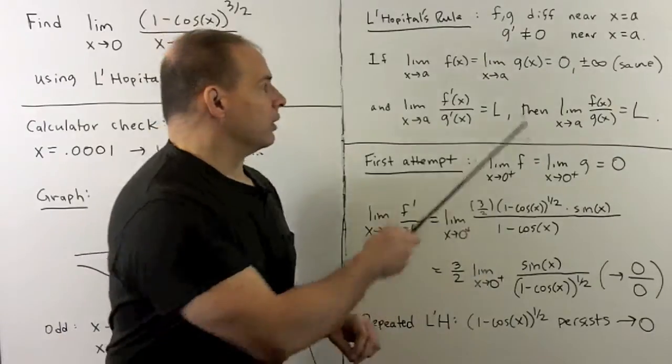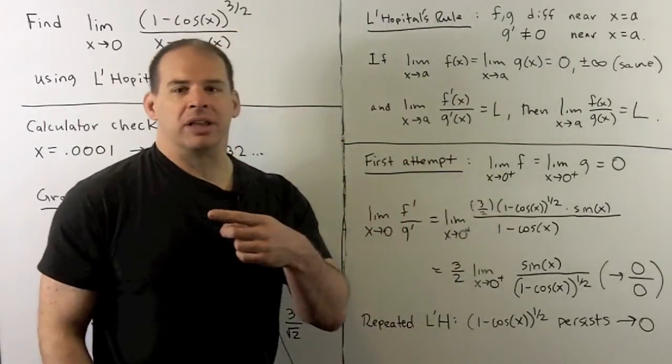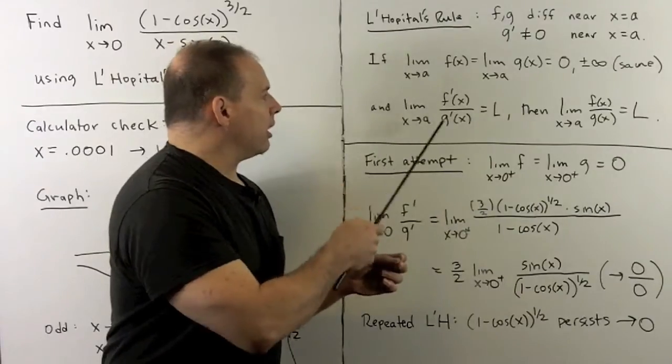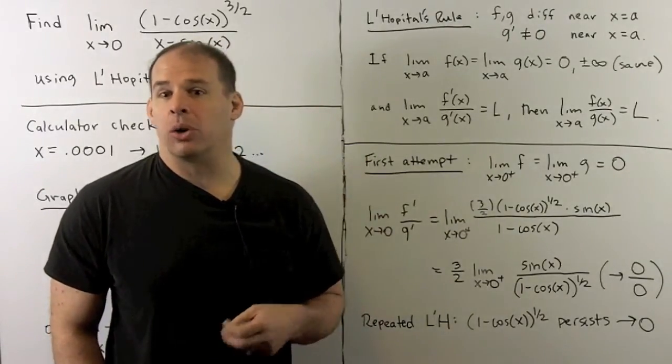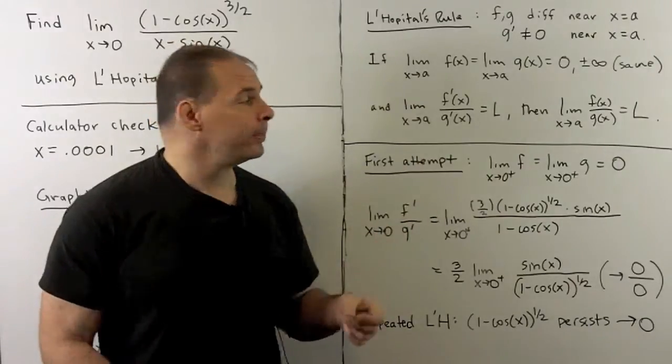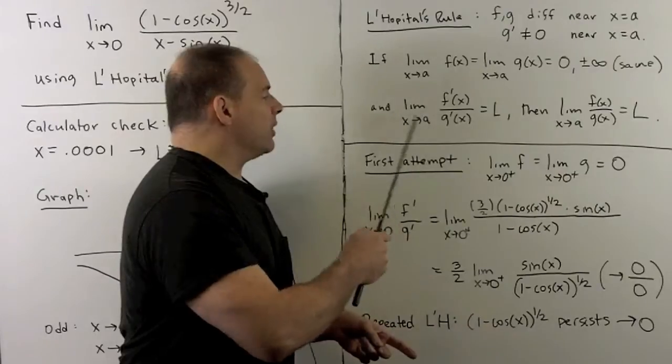Recall L'Hôpital's rule, so here's the strict statement. Basically, if we're taking a limit of a quotient, and in the top and bottom, they both either go to zero or plus or minus infinity at the same time, we could take derivatives of numerator and denominator, and then try that limit.